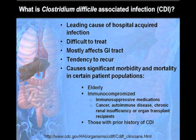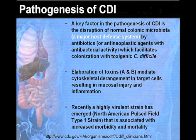CDI disproportionately affects the immune-compromised, such as those on immunosuppressive medications or with an immunocompromising disorder such as cancer, autoimmune disease, chronic renal insufficiency, or organ transplant recipients, and those with prior history of CDI. A key factor in the pathogenesis of CDI is the disruption of the normal colonic microbiota, which is a major host defense system, by antibiotics or by antineoplastic agents with antibacterial activity that facilitates colonization with toxigenic Clostridium difficile.